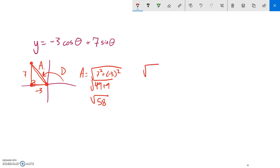So I know that I'm going to have that, and it's going to be in terms of cosine, some angle minus some amount. And to figure out this angle, I'm going to use inverse tangent. Because I know that tangent of D would spit out 7 over negative 3.